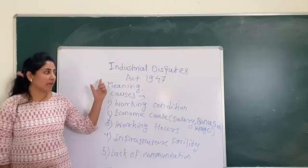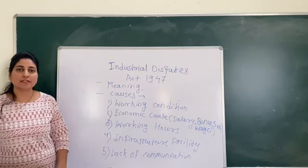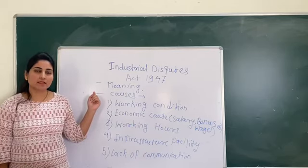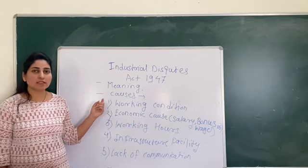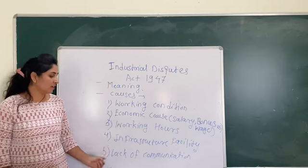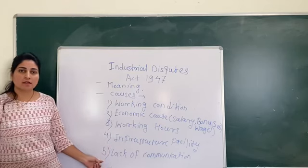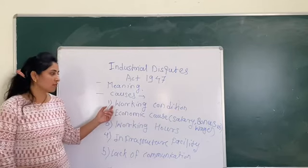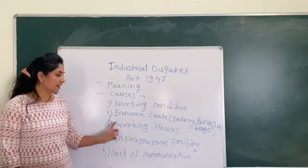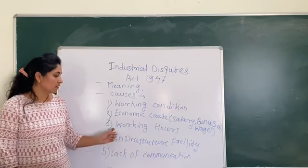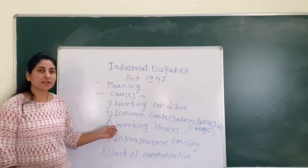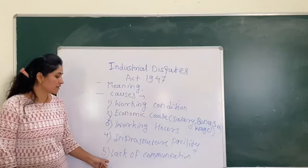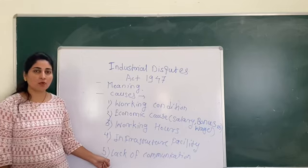Industrial disputes were established in 1947. We will study the meaning of industrial disputes, and after that the causes. There are different types of causes for disputes occurring in the industry: first, working condition; second, economic cause; third, working hours; fourth, infrastructure facility; and last, lack of communication or coordination.